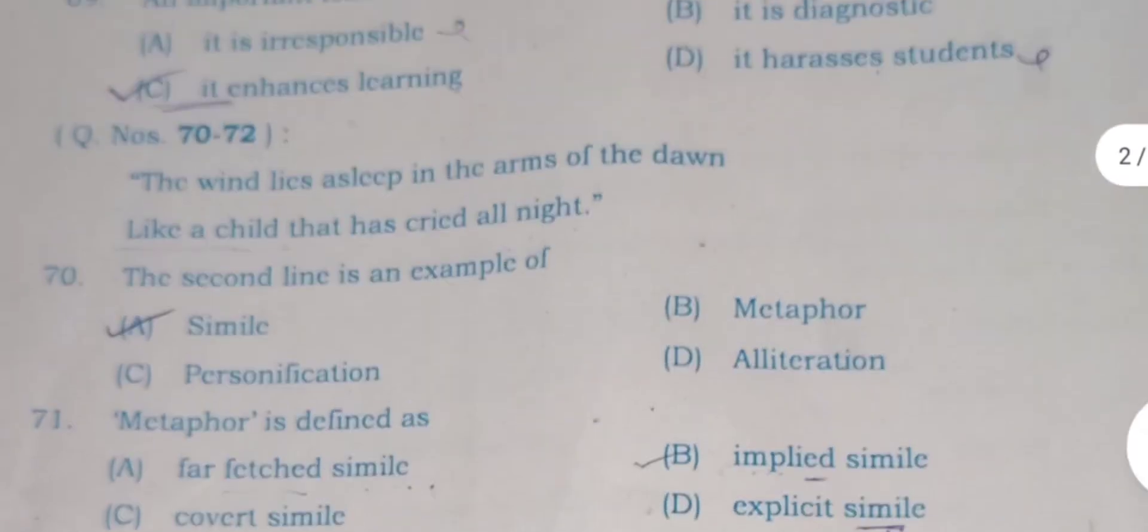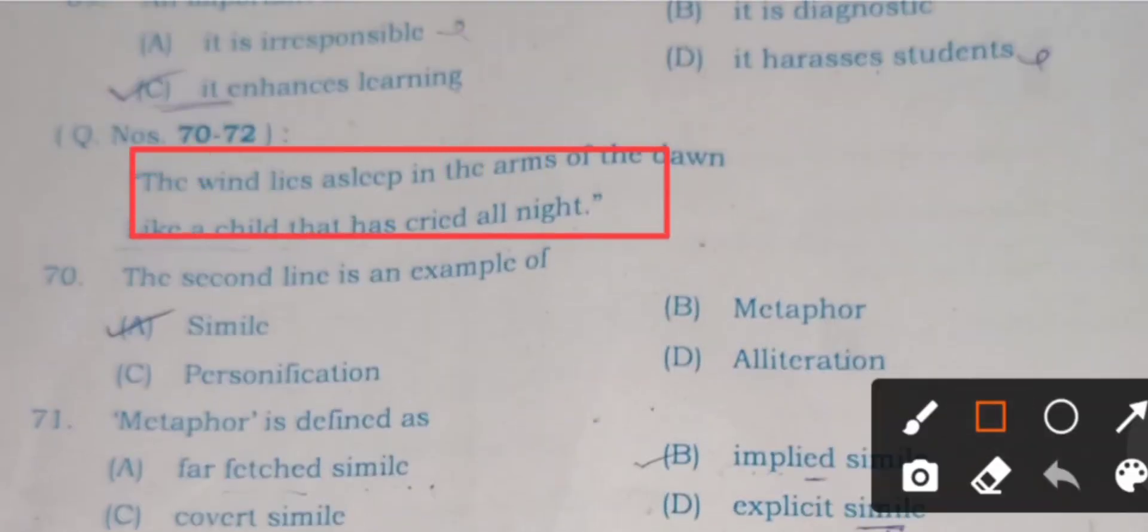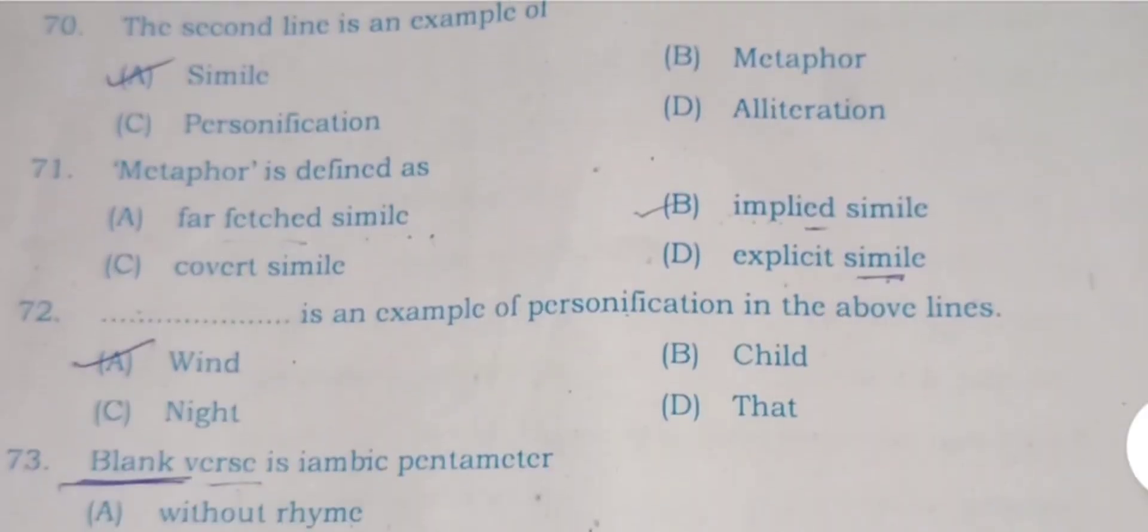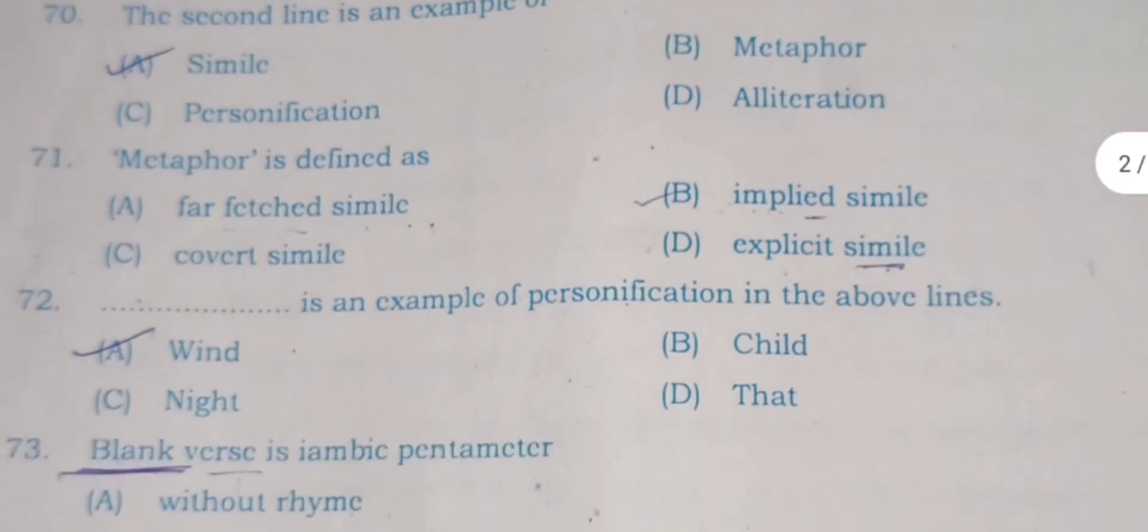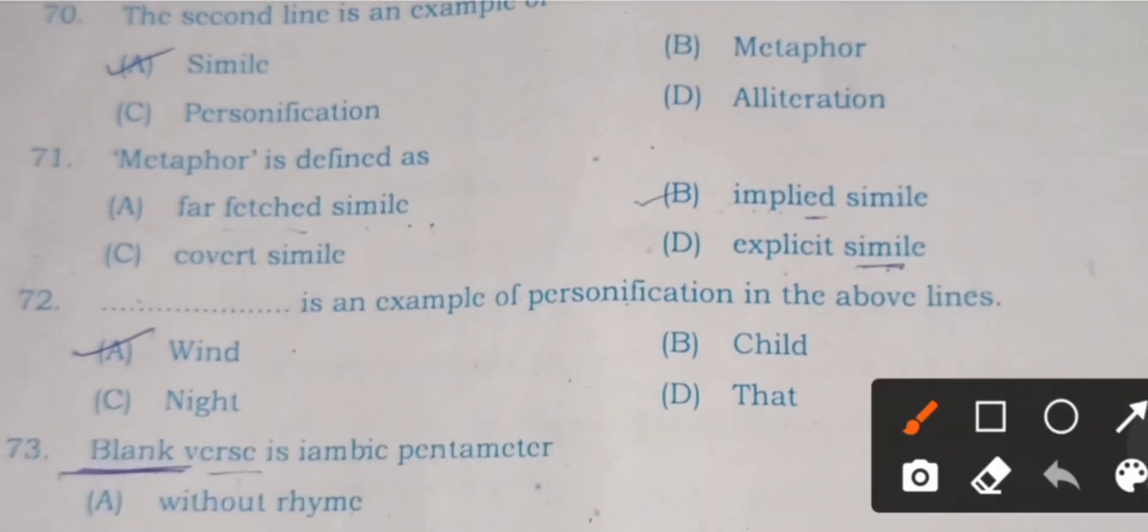Questions 70 to 72 are based on some lines: The wind lies asleep in the arms of the dawn like a child that has cried all night. Here three questions are there. Question 70: The second line is an example of - like a child that has cried all night. Here 'like' word is there, so answer will be simile.